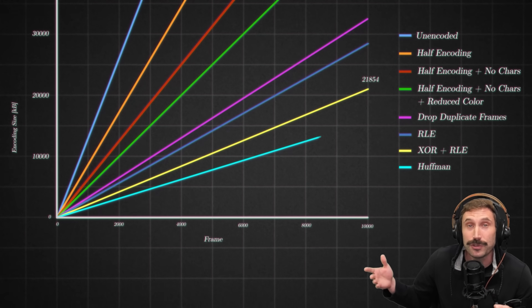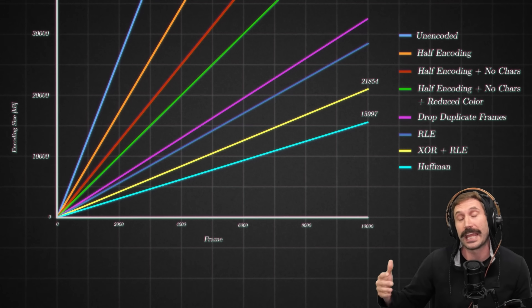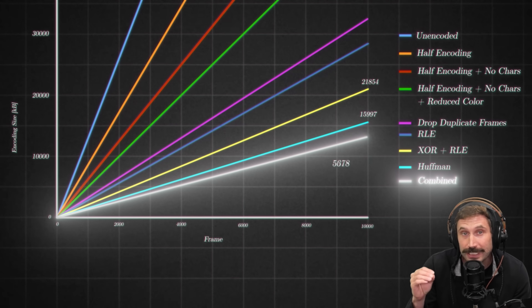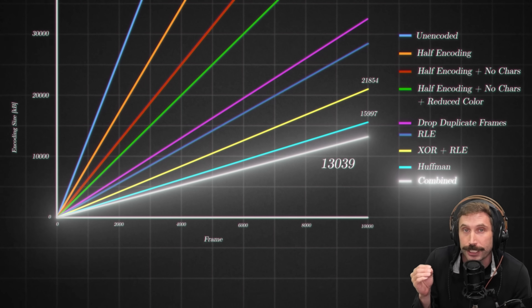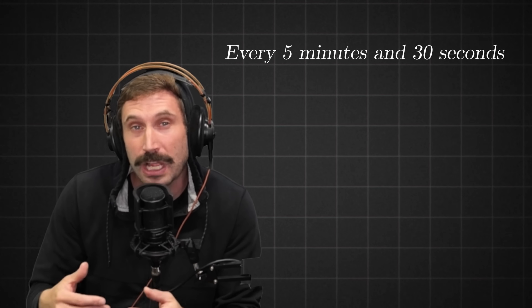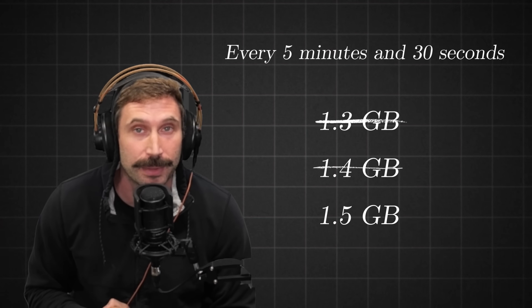Adding Huffman, we are down to 15.99 megabytes for 10,000 frames. And if I take all the strategies and combine them, it gets all the way down to 13 megabytes. That means approximately every five minutes and 30 seconds it will cost about 1.3 to 1.5 gigabytes. Now we're talking — I don't mind spending five to $10 on you degenerates per hour.